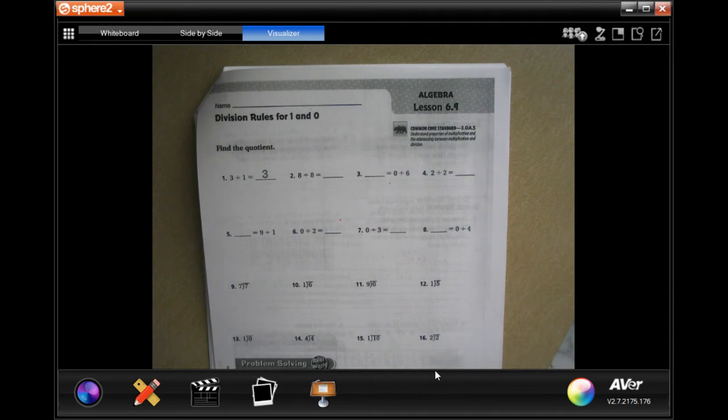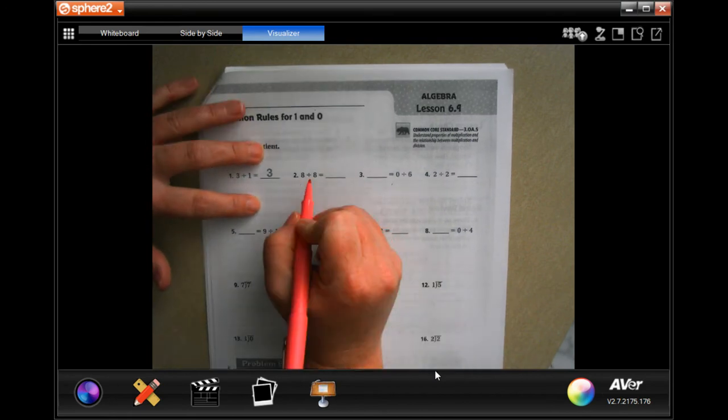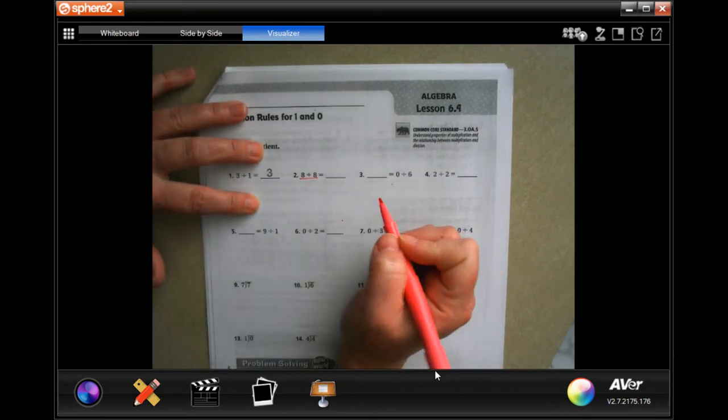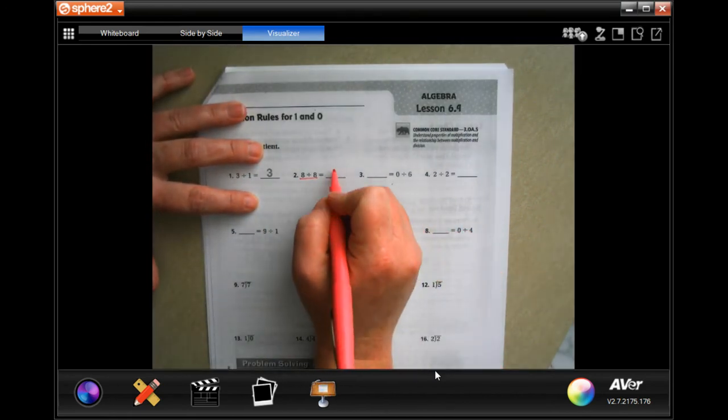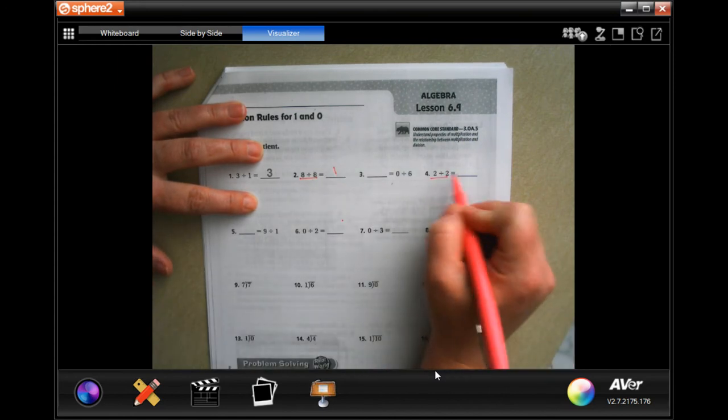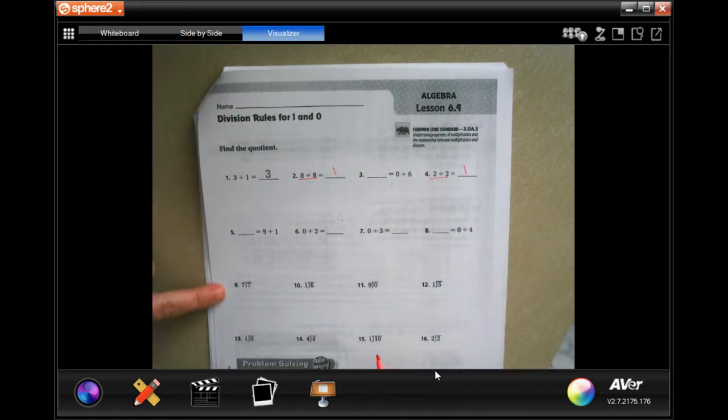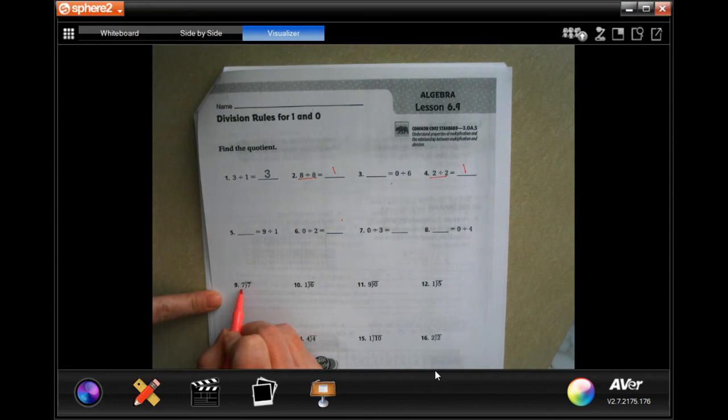When we're doing this, it's division rules for 1 and 0. So I'm going to show you a little trick. When the two numbers are the same with division, the answer is going to be 1. So anywhere on here that you see that the numbers are identical, right there, 7 divided by 7, it'll be 1.